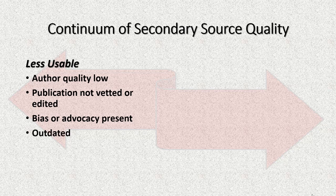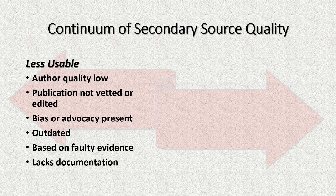Less useful sources might be outdated or rely on refuted data or interpretations. Age alone is not a reliable indicator, as some exemplary sources may have nailed it years ago, but publication date can be a red flag. The source might have faulty evidence, often the result of an author's agenda or having been replaced by new discoveries or newly opened archives. Finally, less useful sources often lack documentation like source citations. Some publishers demand that researchers tone down documentation, but for our purposes those kinds of undocumented sources are problematic. Beware of them and their information.